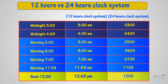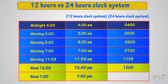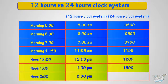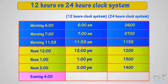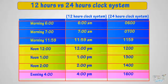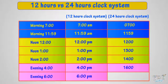1 p.m. is 1300 — that is, 1300 hours in the 24-hour clock system. 2 in the noon is called 2 p.m. in the 12-hour clock system, and 1400 — that is, 1400 hours — in the 24-hour clock system. 4 in the evening is called 4 p.m. in the 12-hour clock system and 1600 hours in the 24-hour clock system. 6 in the evening is called 6 p.m. in the 12-hour clock system and 1800 hours in the 24-hour clock system.